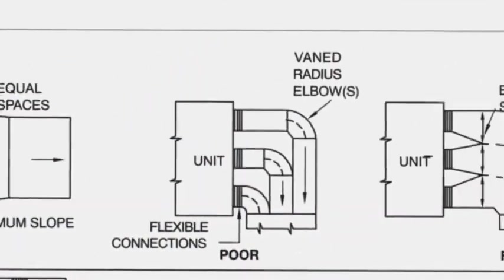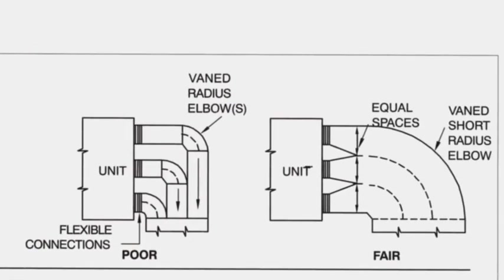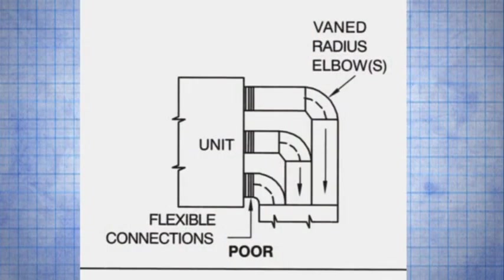The other contributor to high energy use is that as the available space for mechanical components is reduced, duct system pressures have increased in order to convey more conditioned air to the space and occupants through tight turning fittings. This comes at the expense of higher fan requirements.